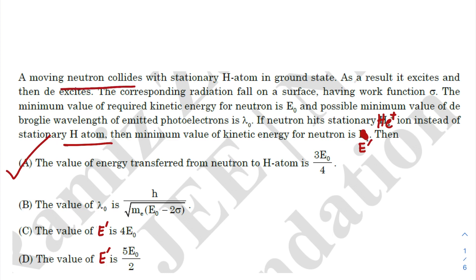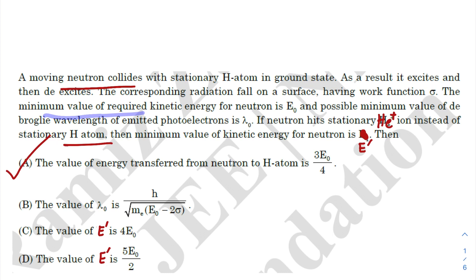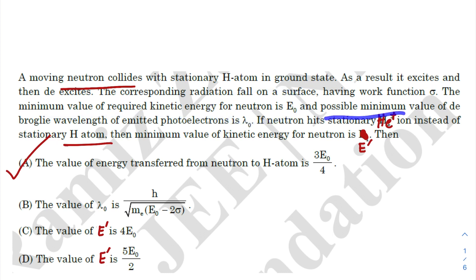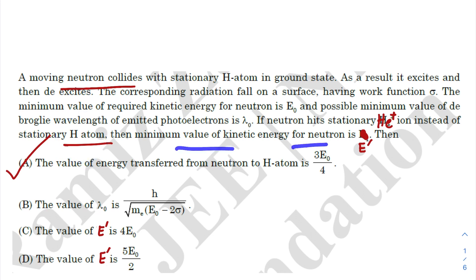In today's question, a moving neutron collides with a stationary hydrogen atom in ground state. As a result, it excites and then de-excites. The corresponding radiation falls on a surface having work function sigma. The minimum value of required kinetic energy for the neutron is E₀, and the possible minimum value of de Broglie wavelength of emitted photoelectrons is λ₀. If the neutron hits a stationary helium-plus ion instead of the hydrogen atom, then the minimum kinetic energy for the neutron is E prime.